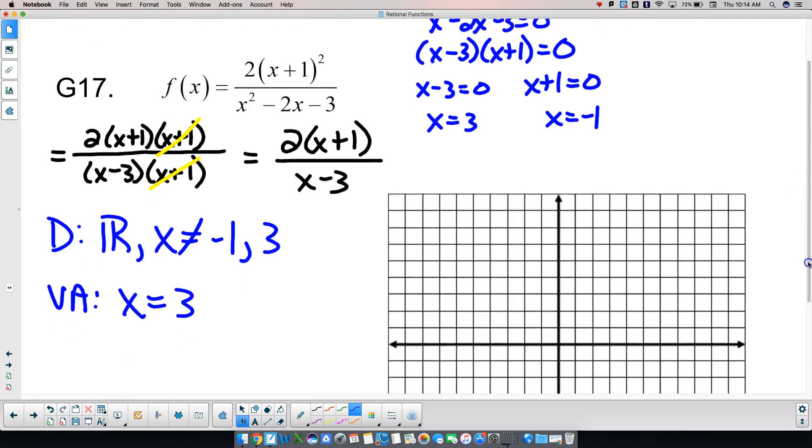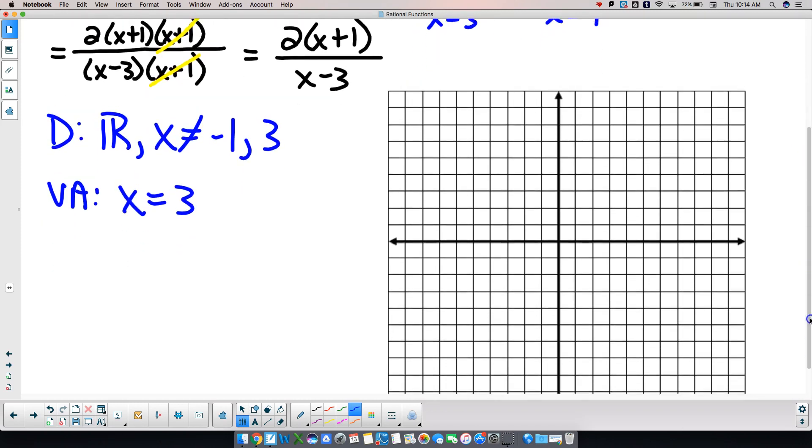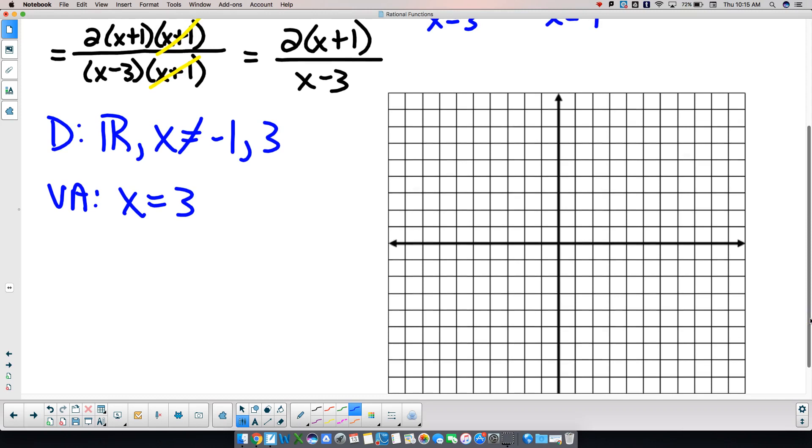On my new function, the degree of the top is 1, the degree of the bottom is 1, so that means my horizontal asymptote is same over same. Lead coefficient up top is 2, lead coefficient on the bottom is 1, which means y equals 2 there.